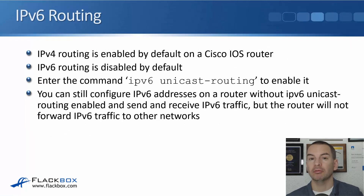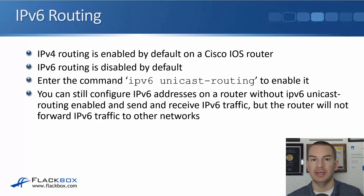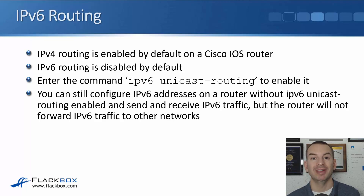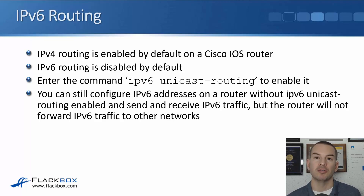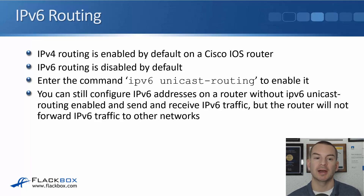IPv4 routing is enabled by default on a Cisco IOS router, but IPv6 routing is not, so you have to turn it on. The way you turn it on is with the command 'IPv6 unicast routing'.